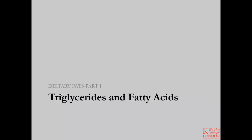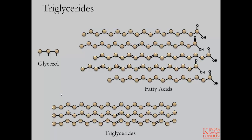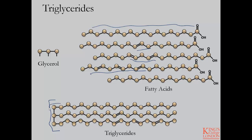Moving on to fatty acids and triglycerides — triglycerides are by definition a combination of glycerol and three fatty acids which are esterified to the glycerol moiety. Here are examples of different fatty acid types: a saturated fatty acid, a monounsaturated fatty acid, and polyunsaturated fatty acids. Triglycerides can have varying fatty acids in terms of chain length and unsaturation at any given position on the glycerol, as illustrated in the cartoon showing a saturated, a monounsaturated, and a polyunsaturated fatty acid bound to glycerol.